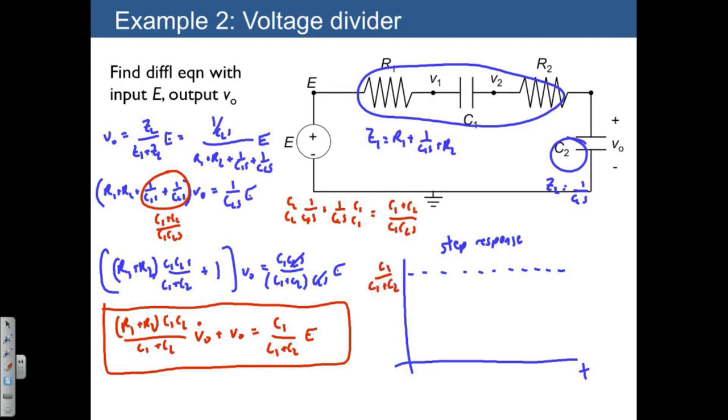We also know that this is going to be an exponential, and we know that exponential has a time constant tau, which is just going to be equal to R1 plus R2 quantity times C1C2 divided by C1 plus C2.